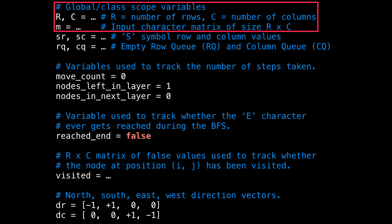The first two variables are the constants R and C, the number of rows and columns in the input matrix. Following this is m, the input character matrix of size R by C. Next are two variables, sr and sc, the row-column position of the starting node.